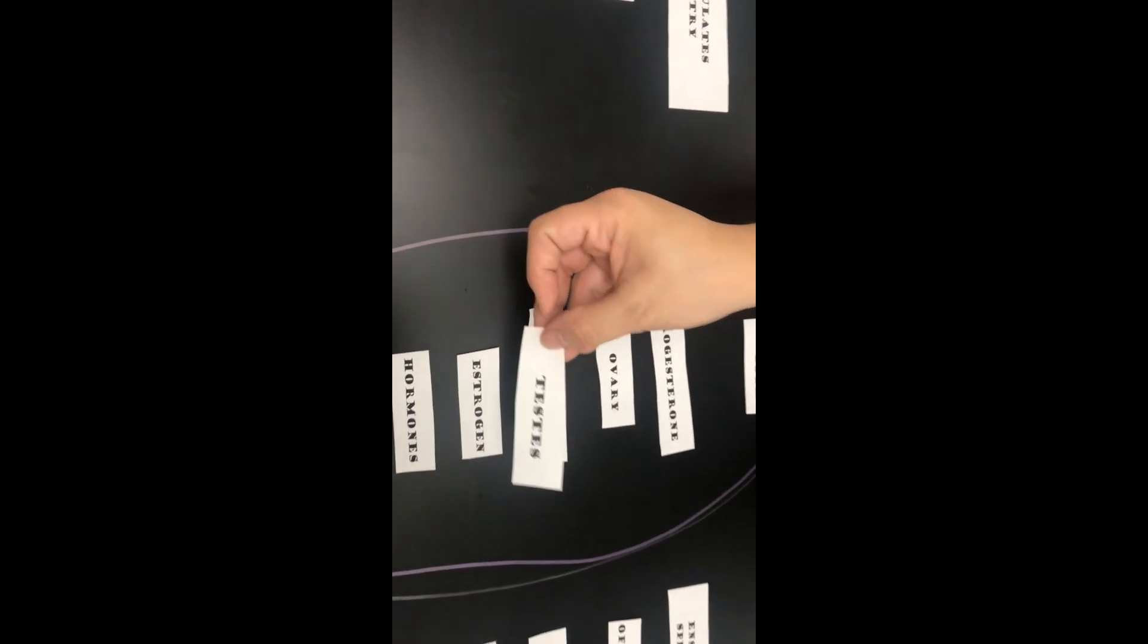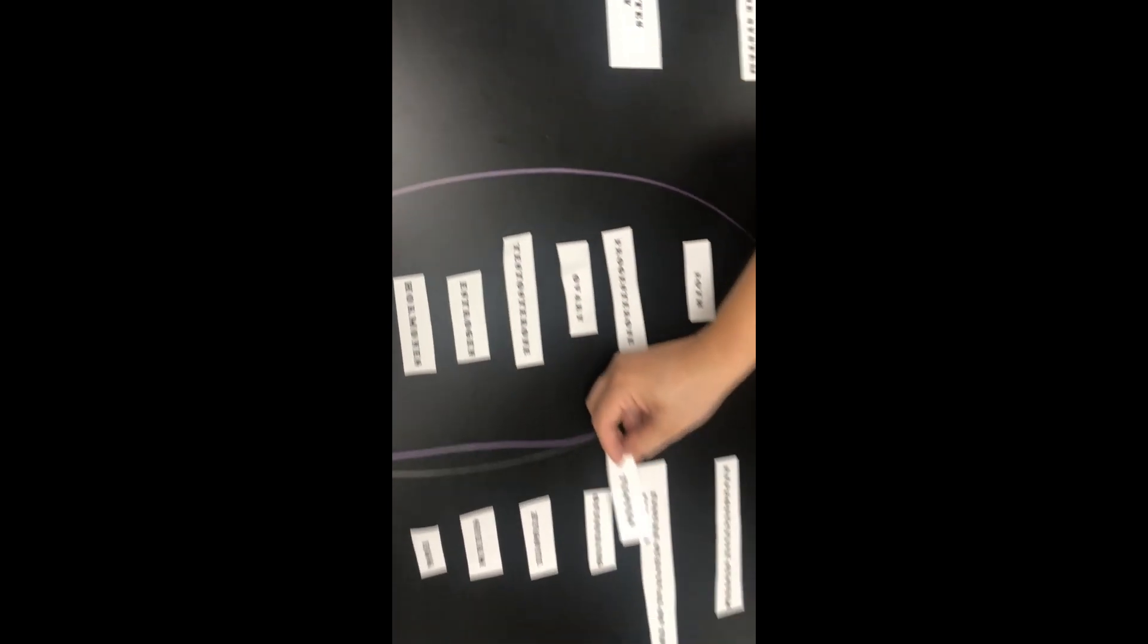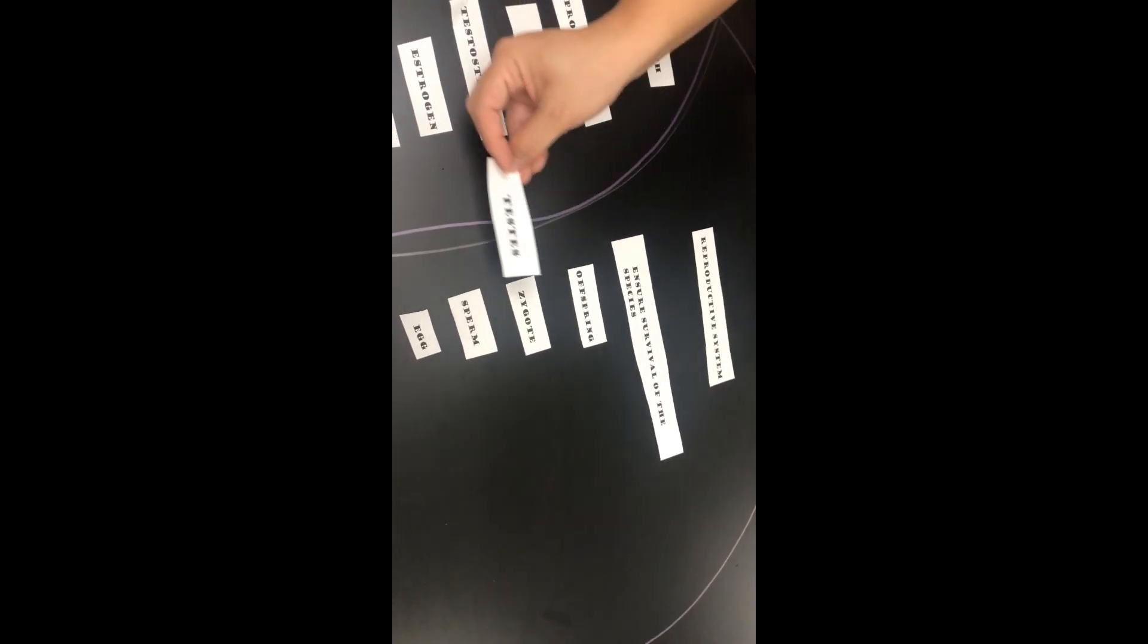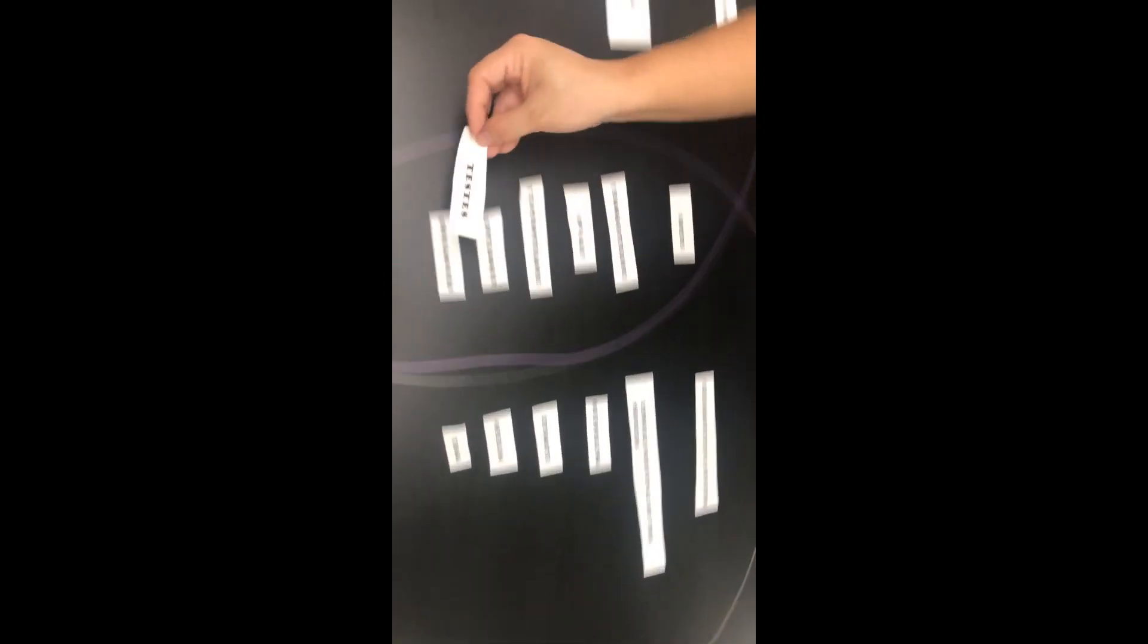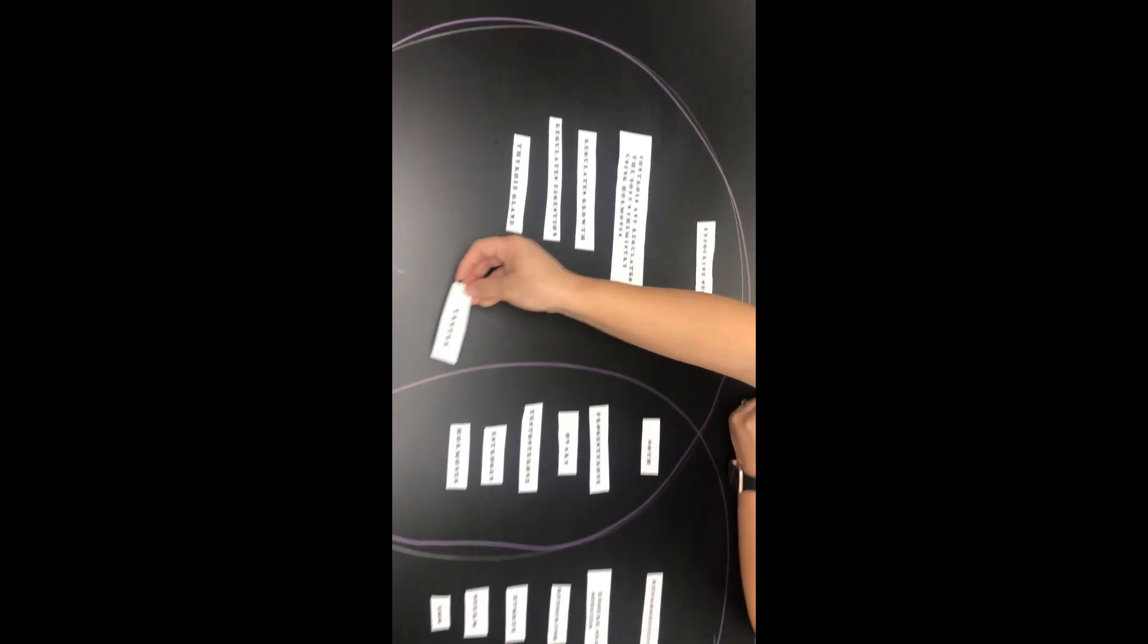And then the last one we have is testes. The testes are found in males. They are part of the male reproductive system, but they also produce hormones, which is part of the endocrine system. So we would put testes in both.